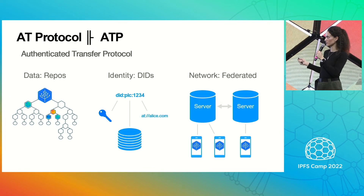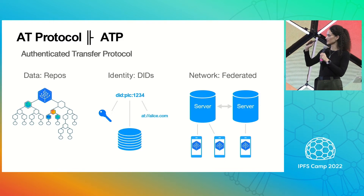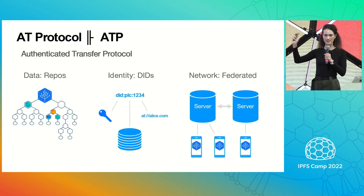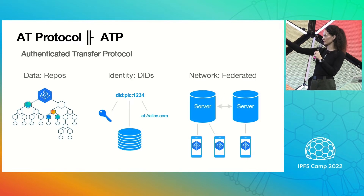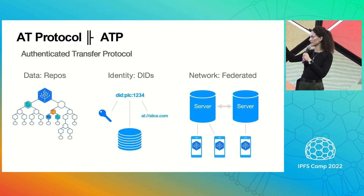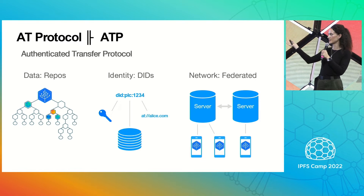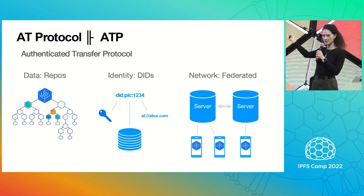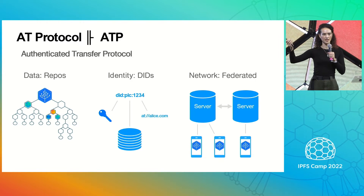For a quick overview of that protocol: it uses IPLD in the data repos, essentially a Merkle tree where each node uses IPLD. The identity layer uses DIDs — decentralized identifiers — that link a human-readable name and a cryptographic key. This is used to sign the Merkle root. The network is federated, so users have servers that do the heavy lifting, but this allows their data to be kept in a canonical form that they can move around.